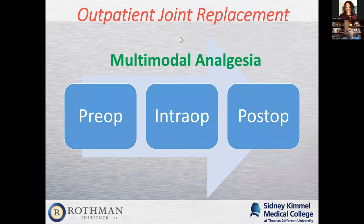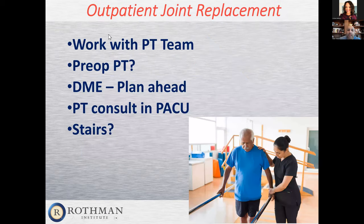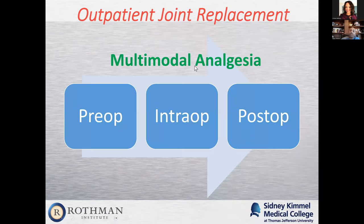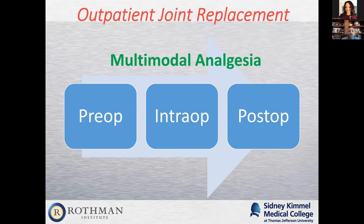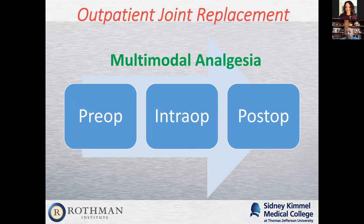When we talk about outpatient joint replacement, pain control is really key. We do a lot of things before surgery, during surgery, and after surgery to help with pain. Before surgery, we give medications — anti-inflammatories, anti-nerve medications, even narcotics. Intraoperatively, we do injections in the joint capsule with numbing medications, and we can do nerve blocks, which can alleviate pain for the first 24 to 36 hours after surgery. After surgery, we do anti-inflammatories, steroids, anti-nerve medications, and muscle relaxers. We try to limit the narcotics, but usually people will get one prescription for about 20 or 30 pills of Vicodin for breakthrough pain.